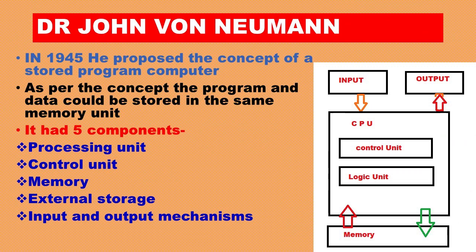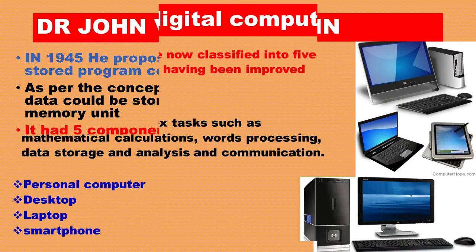Dr. John Von Neumann. In 1945, he proposed the concept of a stored program computer. As per the concept, the program and data could be stored in the same memory unit. It had five components: Processing unit, Control unit, Memory, External storage, and Input and output mechanisms.